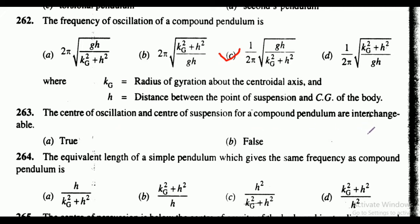Question 263: the center of oscillation and center of suspension for a compound pendulum are interchangeable — true or false? Option A is correct: it is true. Question 264: the equivalent length of a simple pendulum which gives the same frequency as a compound pendulum. The correct answer is option B: Kg square plus h square upon h.